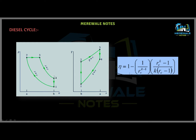Process 3-4 is the isentropic expansion, where work is done by the system. And process 4-1 is the constant volume heat rejection process. On the basis of this PV diagram, we make the TS diagram. The main difference between the TS diagram of the diesel cycle and the Otto cycle is that heat addition takes place in the Otto cycle at constant volume, while in the diesel cycle it takes place at constant pressure.